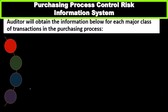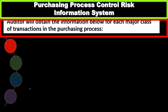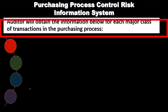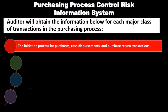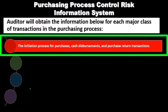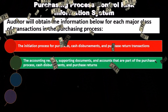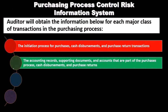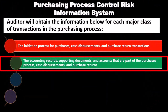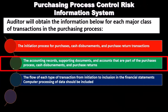For the purchasing process control risk information system, the auditor will obtain information for each major class of transaction in the purchasing process. This includes the initiation process for purchases, cash disbursements, and purchase return transactions, along with the accounting records, supporting documents, and accounts that are part of those processes.